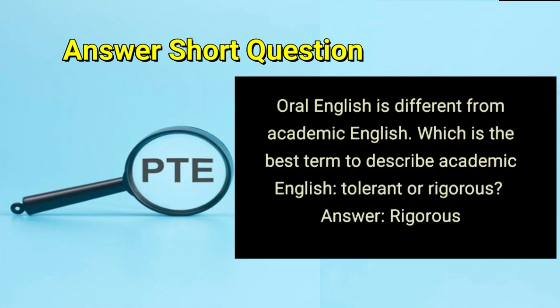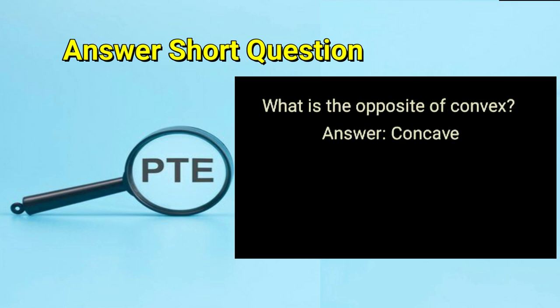Oral English is different from academic English. Which is the best term to describe academic English — tolerant or rigorous? Answer: rigorous. What is the opposite of convex? Answer: concave.